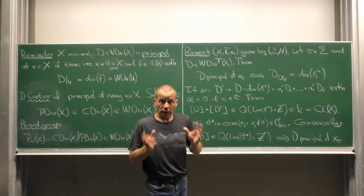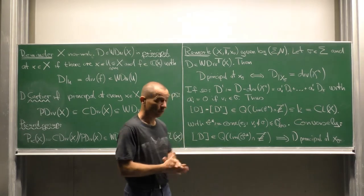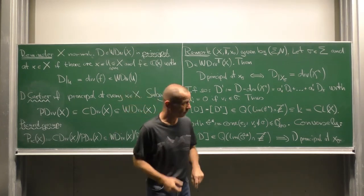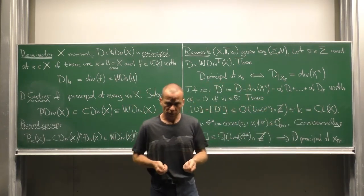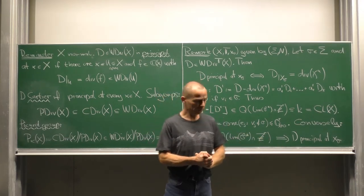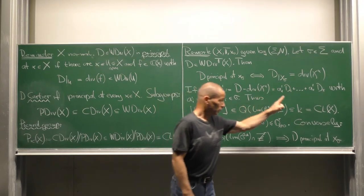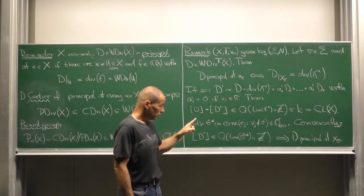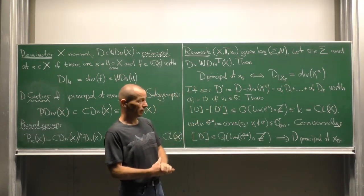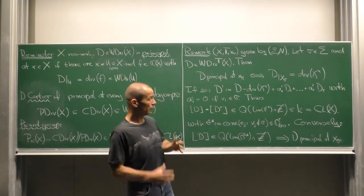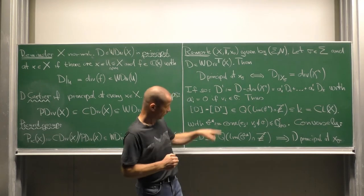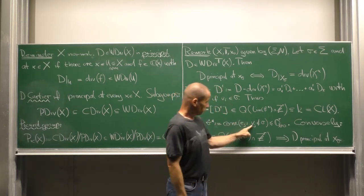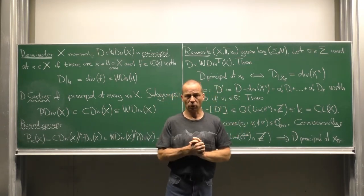This allows us to say something about the divisor class of D equals the divisor class of D'. Recall that divisor class of D' is obtained by projecting the coefficient vector a 1 prime up to a r prime via the map q to k which is equal to the divisor class group. Now we denote by sigma hat star the face of the orthant which is generated by all the canonical basis vectors e j such that the primitive generator v j does not belong to sigma.